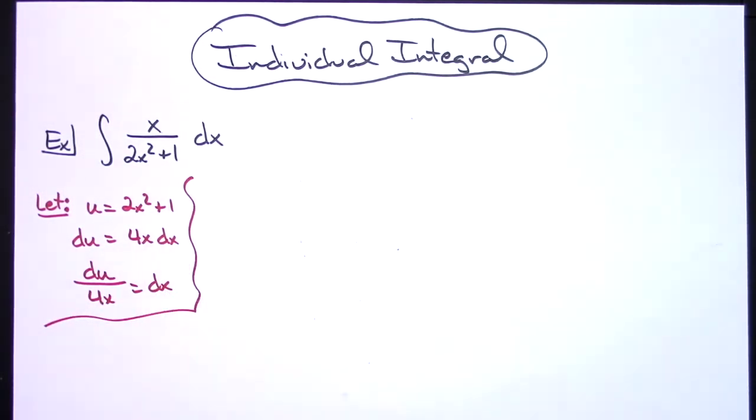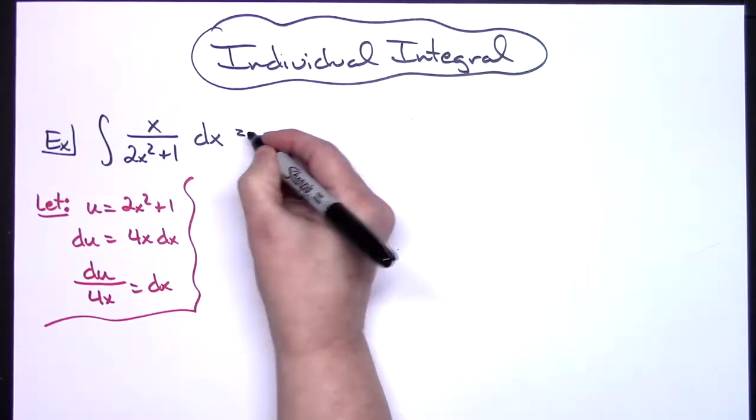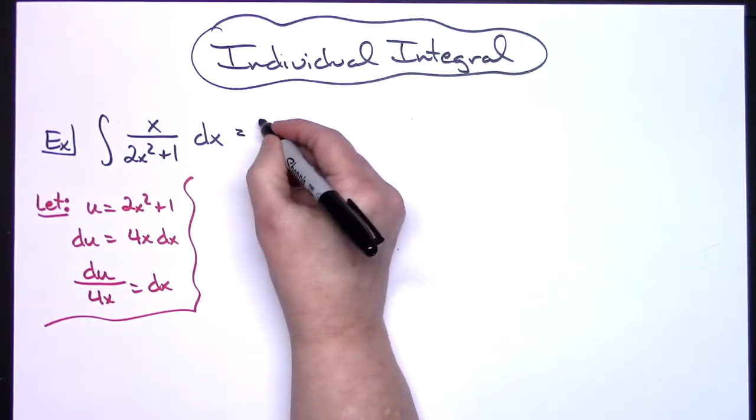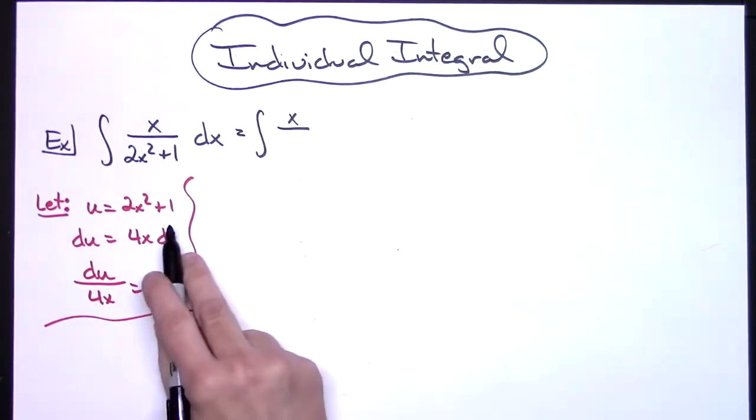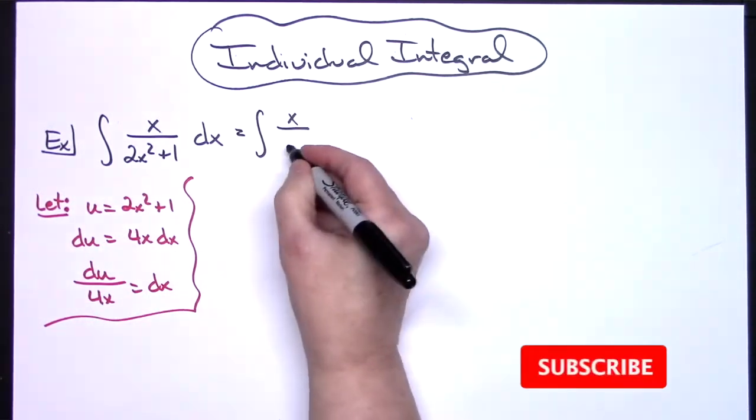Then I'm going to come up here to the original integral and start making some substitutions. I'll have the integral, I'm going to keep the x on top, and I'm going to replace the denominator with u.